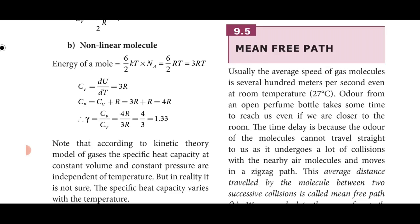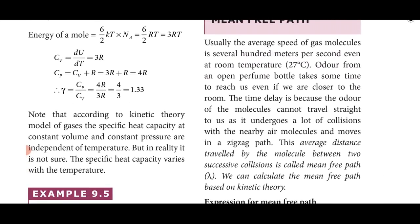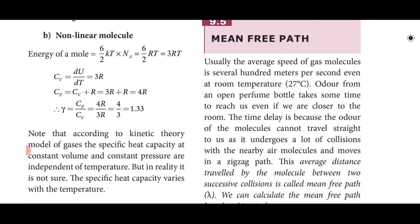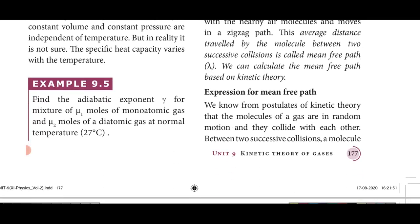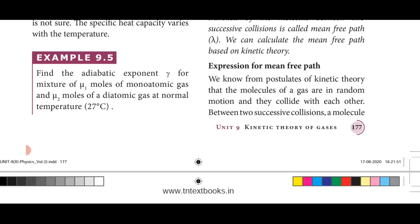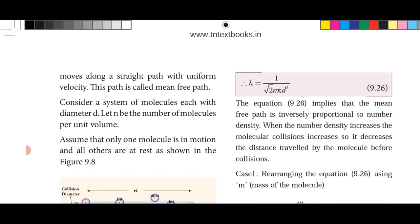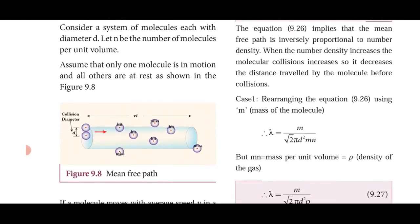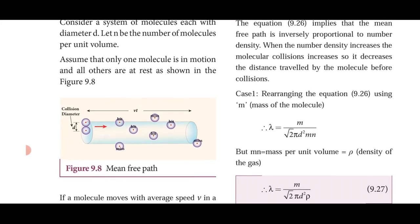Next is mean free path — the average distance traveled by a molecule between two successive collisions. For the derivation, consider a system of molecules with diameter d, and let n be the number of molecules per unit volume. We assume only one molecule is in motion while all others are at rest.